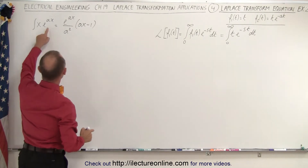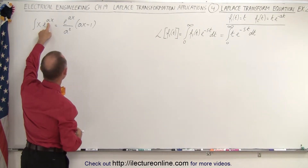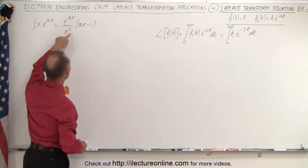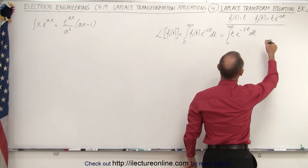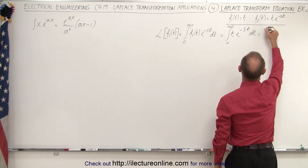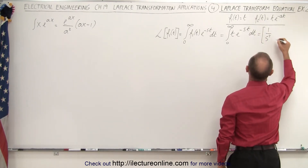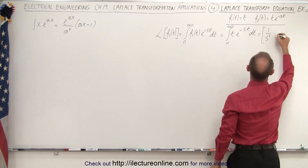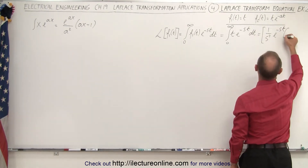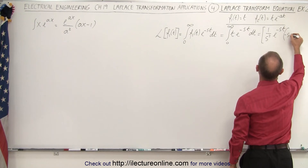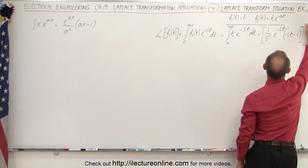Now the difference here is that instead of a, we have s, and instead of positive s, we have negative s. That means this becomes negative — negative a squared — so make sure we adapt it for our particular integral. This then becomes one over s squared times e to the negative st, times the quantity negative s times t minus one, evaluated from zero to infinity.